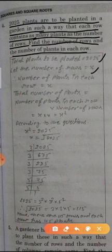Let total number of rows is x. Again, total number of plants in each row is x. So total number of plants is equal to plants in each row multiply number of rows, so it is x squared. So now we find the square root of 2025.